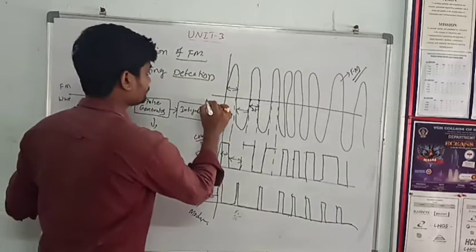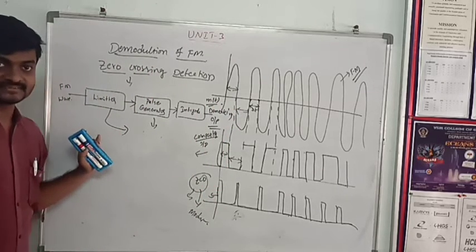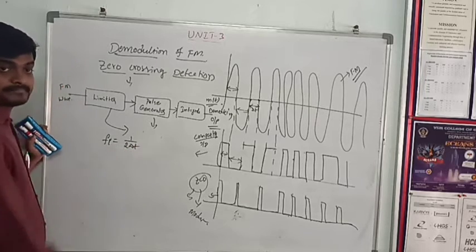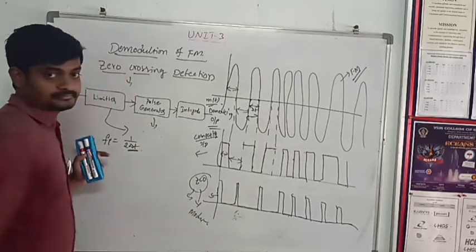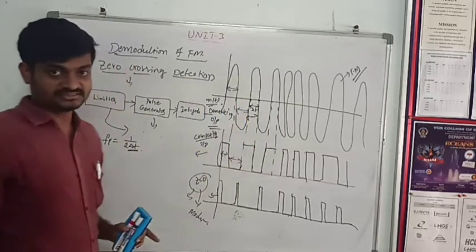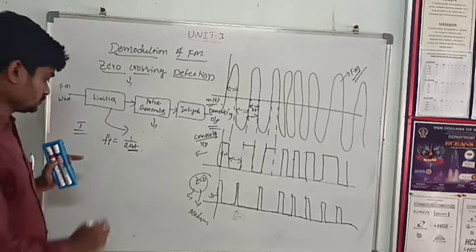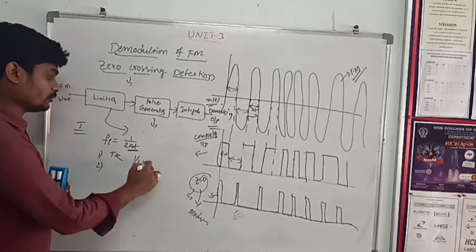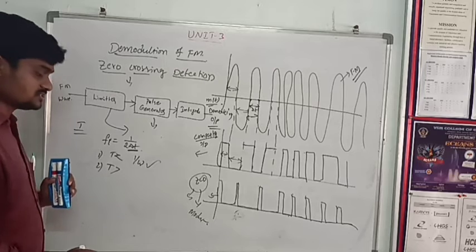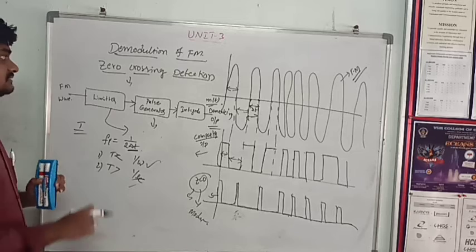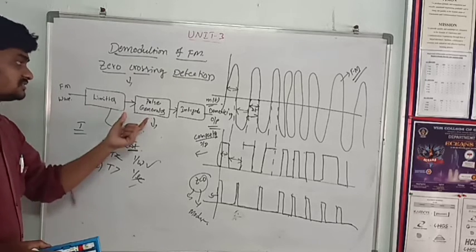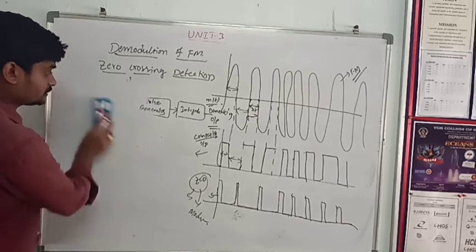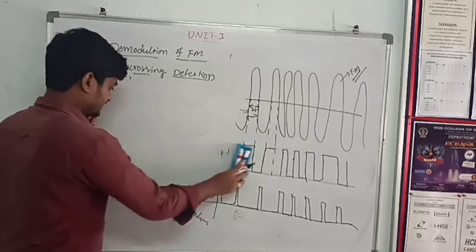The zero crossing detector operates on the principle that instantaneous frequency f equals 1 by 2 delta t, where delta t is the time difference between the two adjacent zero crossing points. The time interval T is chosen with two conditions: T should be small compared to 1 by omega, where omega is the bandwidth of the message signal, and T should be large compared to 1 by Fc, where Fc is the frequency of the carrier signal. The zero crossing detector has three blocks: limiter, pulse generator, and integrator. This is a direct method to regenerate the message signal.